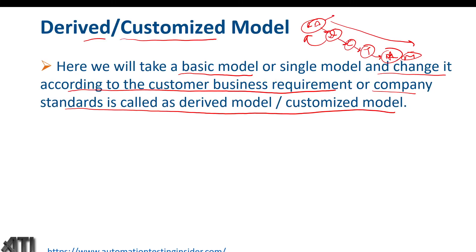Now you can see what we mean by derived model. The spiral model is derived from the waterfall model, which is our traditional base model. I have already spoken about the waterfall model, spiral model, and V&V model in previous videos. If you haven't watched those, please go and watch them — the complete playlist link is provided in the description box.